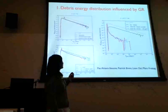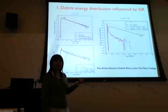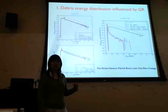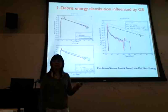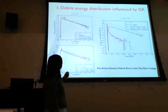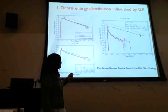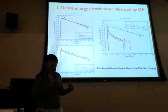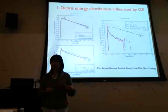For the debris energy distribution influenced by GR, I collaborated with Paul, Patrick, and Mark. We did a hydrodynamical simulation using GADGET with post-Newtonian corrections including spin terms, simulating a star with one solar mass disrupted by a one-million solar-mass supermassive black hole. For this system, the tidal disruption radius is at 100 gravitational radii — the Newtonian regime. But if we increase the beta parameter, the pericenter distance can be as small as around 15 gravitational radii, where GR needs to be accounted for.